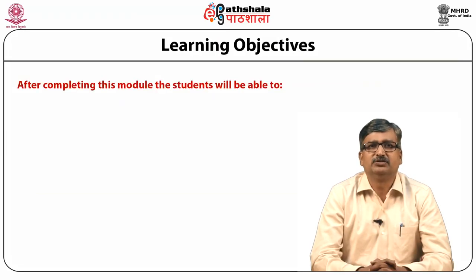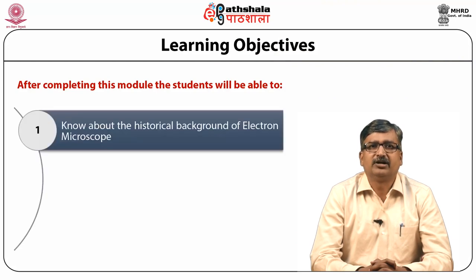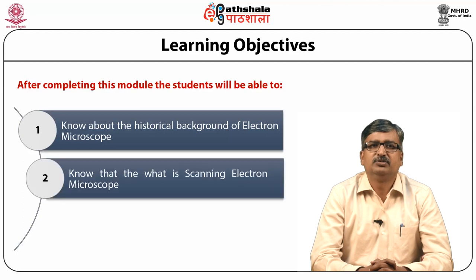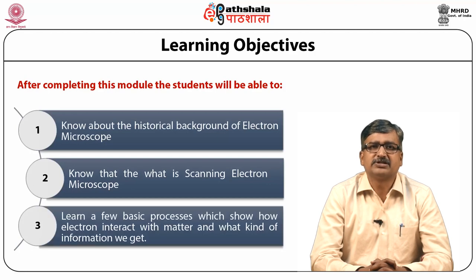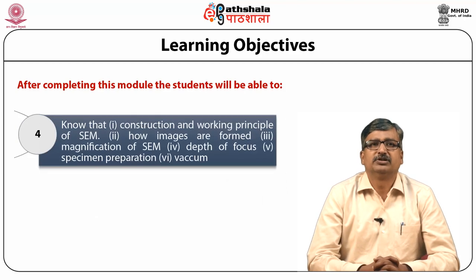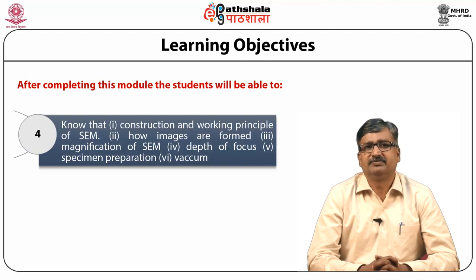After completing this module, the student will be able to learn about the historical background of the electron microscope. They will also know what a scanning electron microscope is, the basic processes of how electrons interact with matter, the construction and working principle of SEM, how images are formed, how magnification is achieved, what depth of focus is, specimen preparation, and vacuum requirements.